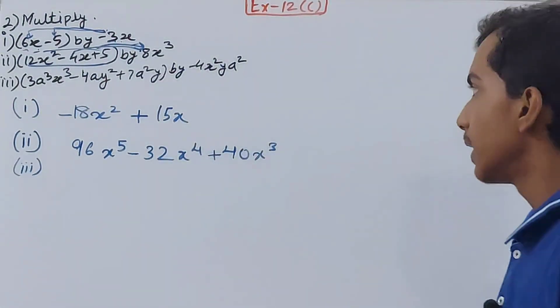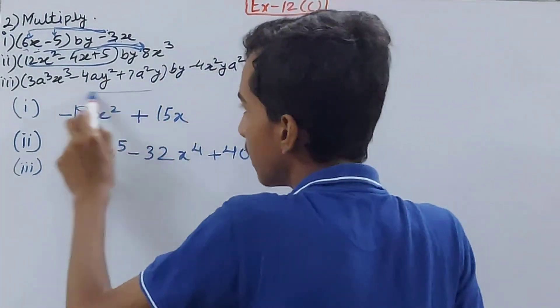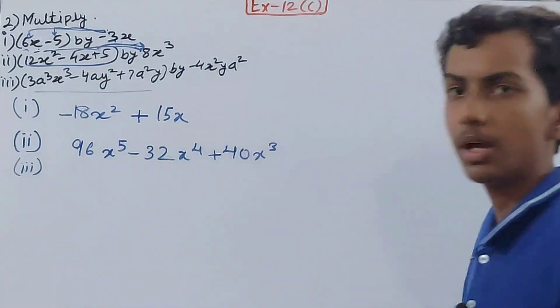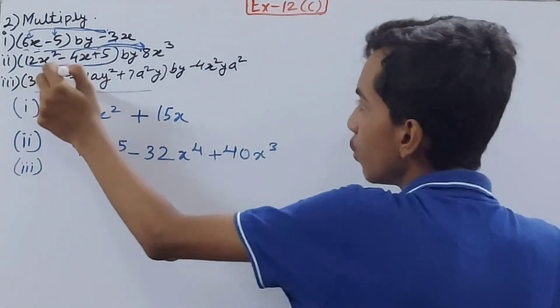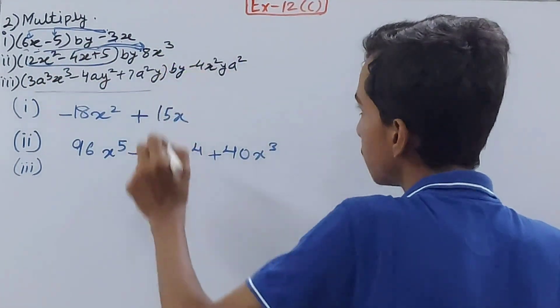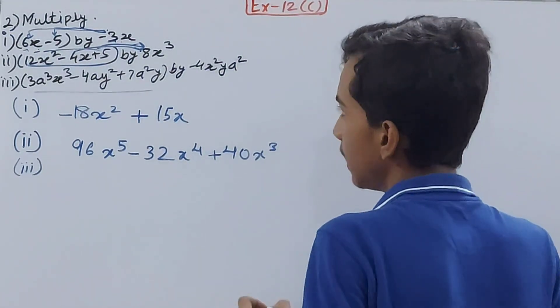So multiply: 3a³x³ by -4x²ya². Multiply constants separately.